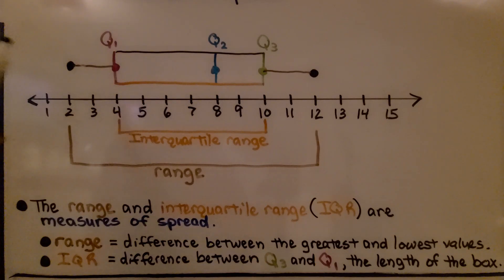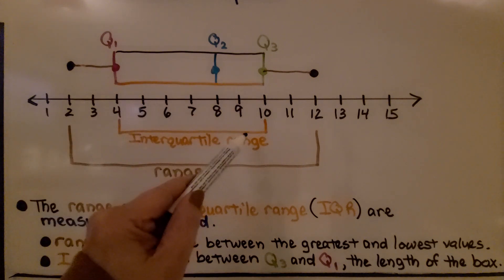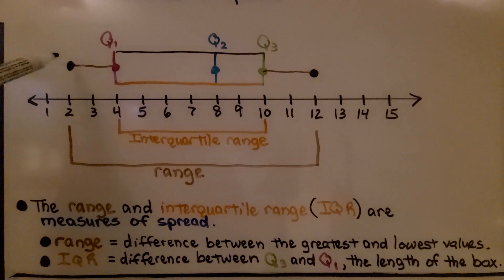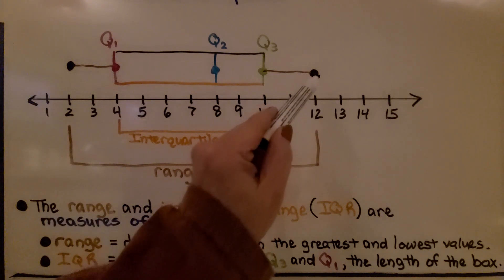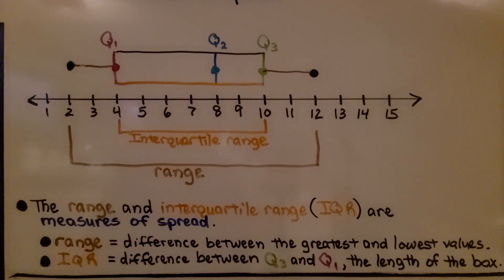So here we have a box plot. We can see the length of the box, that's the interquartile range, and the range is from the lowest value at the end of the left whisker to the greatest value, the end of the right side whisker. The range and interquartile range, the IQR, are measures of spread.